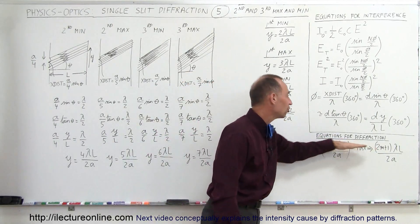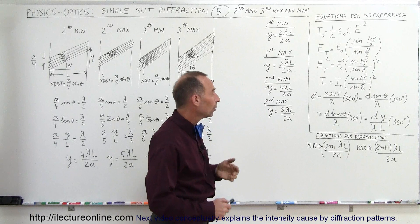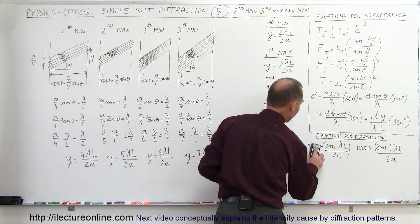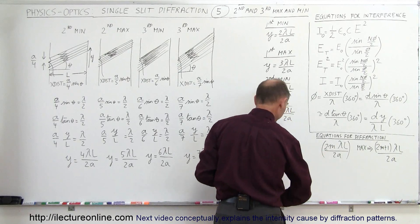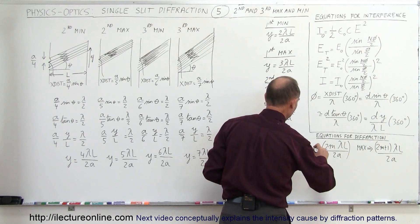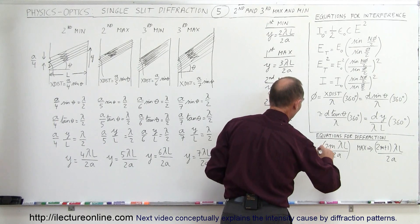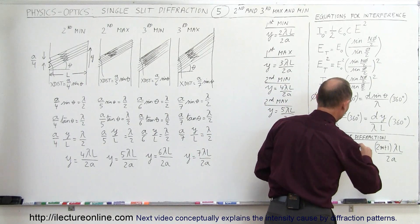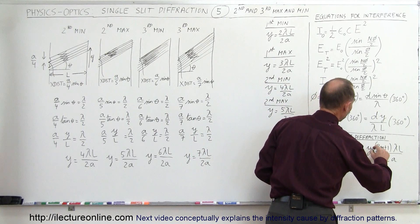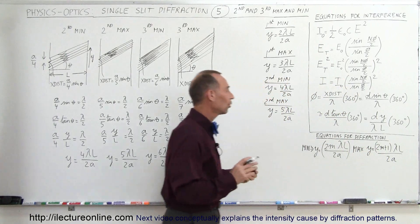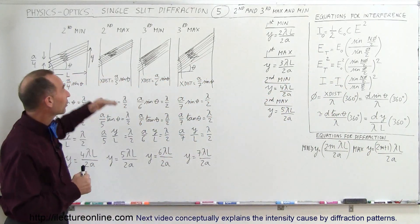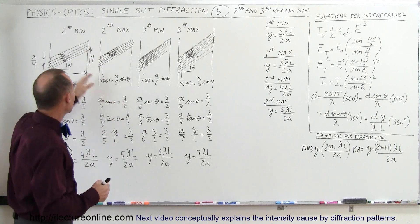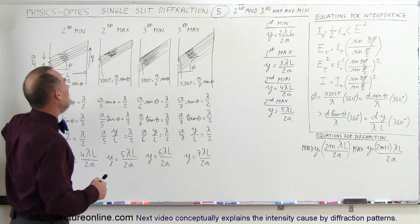So these are the two general equations to find the location of all maxima and minima on the diffraction pattern on the screen directly across a single slit.